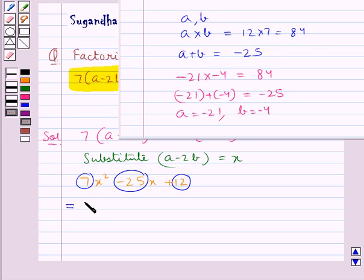So we can write this as 7x² - 21x - 4x + 12.